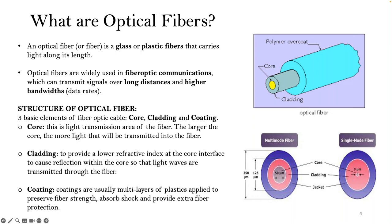The structure of the fiber is just a small cable at about 250 micrometers at its largest diameter. It's mainly made up of three main structures. You've got the core at the center — this is the light transmission area of the fiber, about nine micrometers in size. The wider the core, the more light will be transmitted into the fiber. On top of the core you have the cladding, which is doped with a different refractive index to the core so you can contain light within the core. And then you have the coating, usually made up of multiple layers of plastics to preserve fiber strength, absorb shock, and provide extra fiber protection.